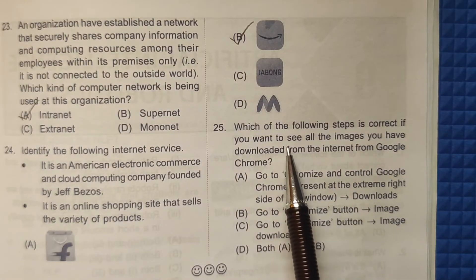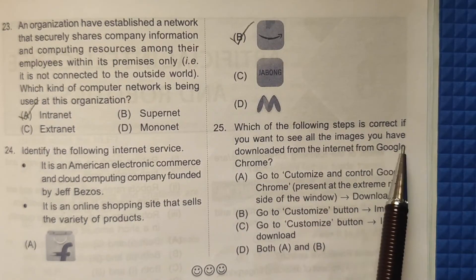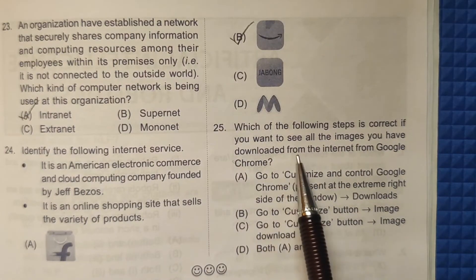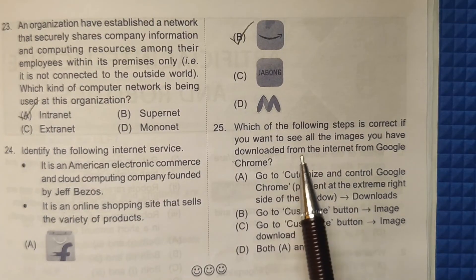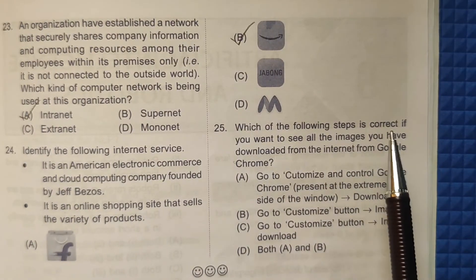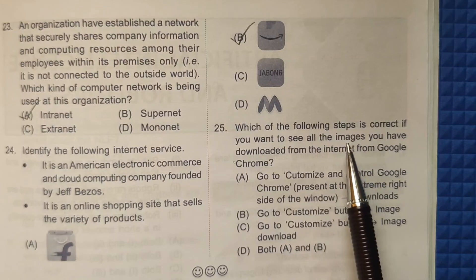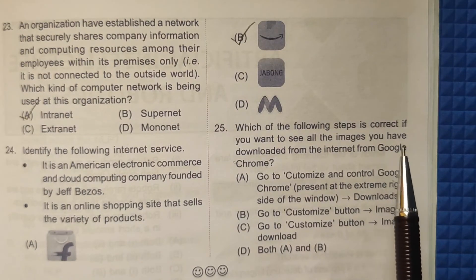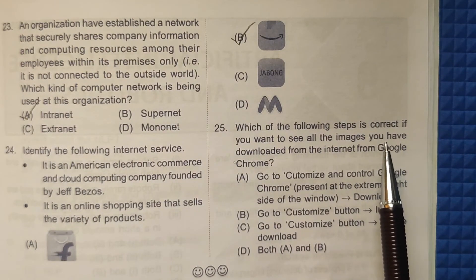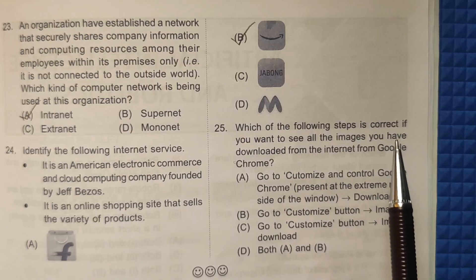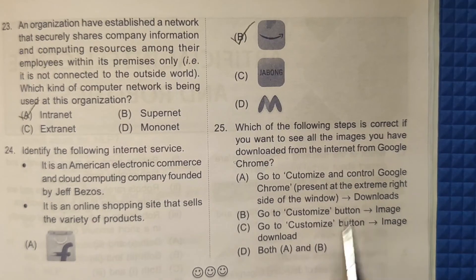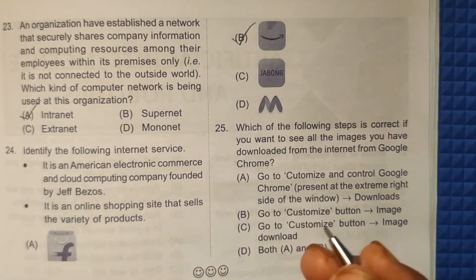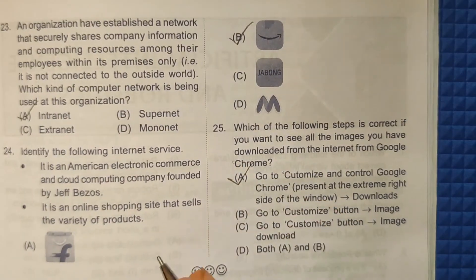Twenty-fifth question: Which of the following steps is correct if you want to see all the images you have downloaded from the internet in Google Chrome? First, go to Customize and Control Google Chrome at the extreme right side of the window, then select Downloads. The correct answer is option A.